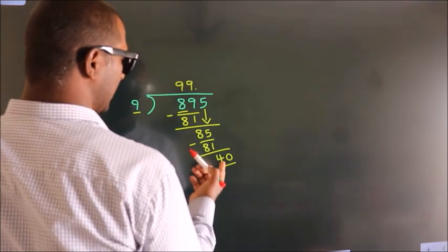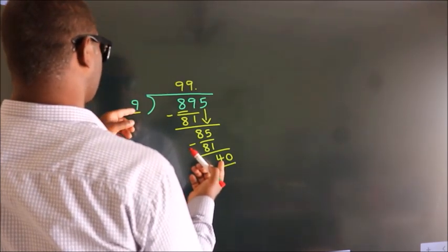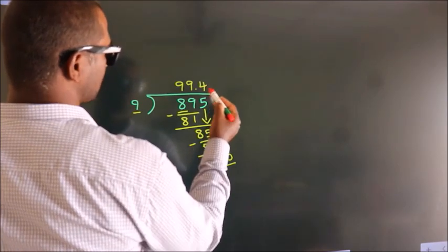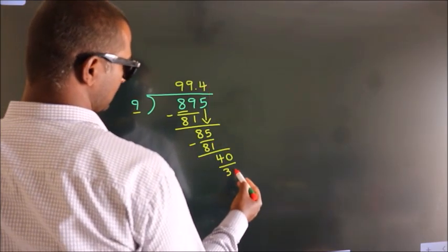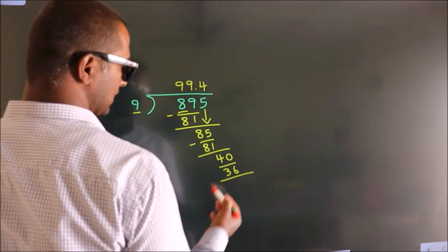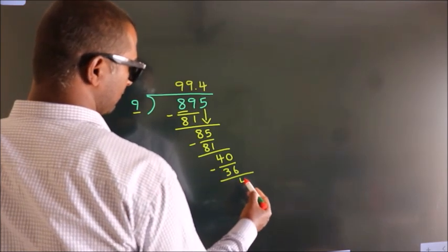A number close to 40 in 9 table is 9 4's 36. Now we subtract, we get 4.